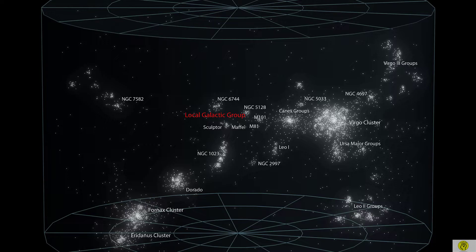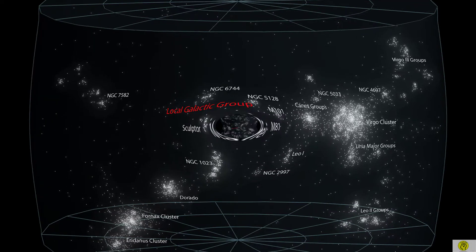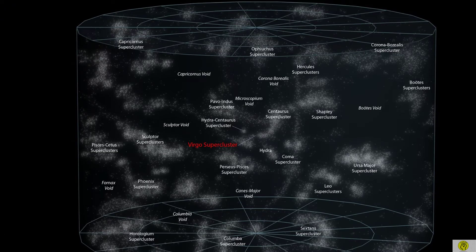However Virgo Super Cluster is also a small place compared to the size of universe. If we consider outside of Virgo Super Cluster you can identify more surrounding super clusters as in this graph.